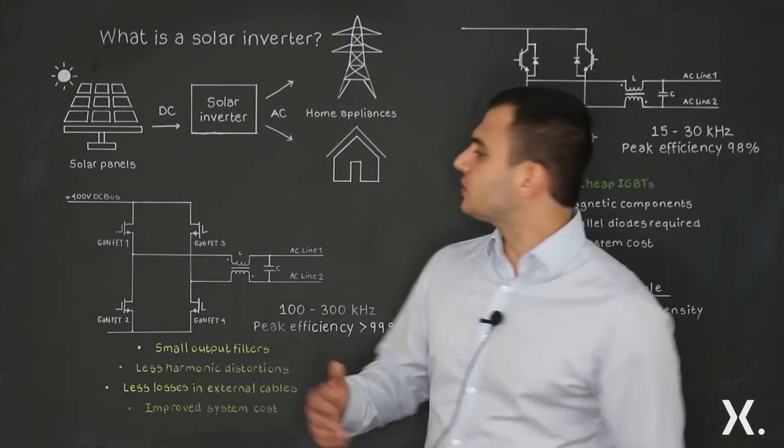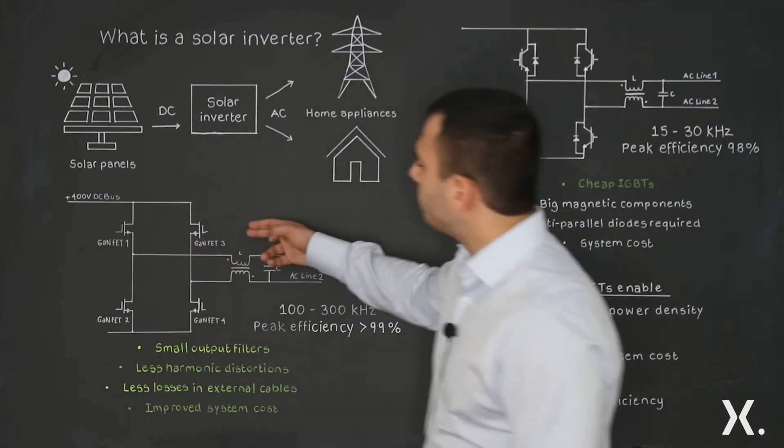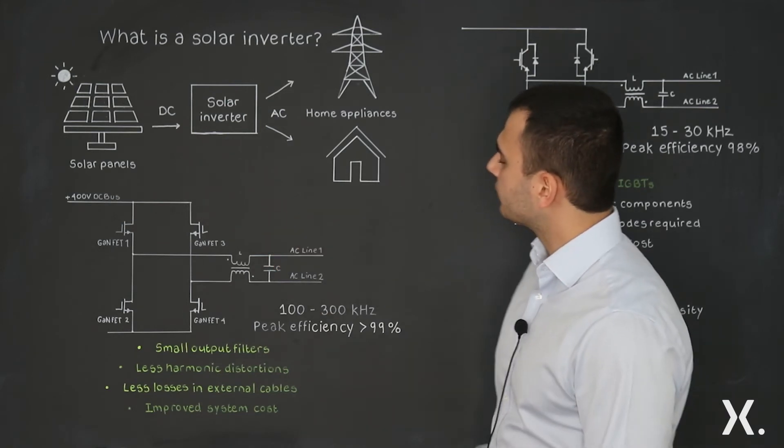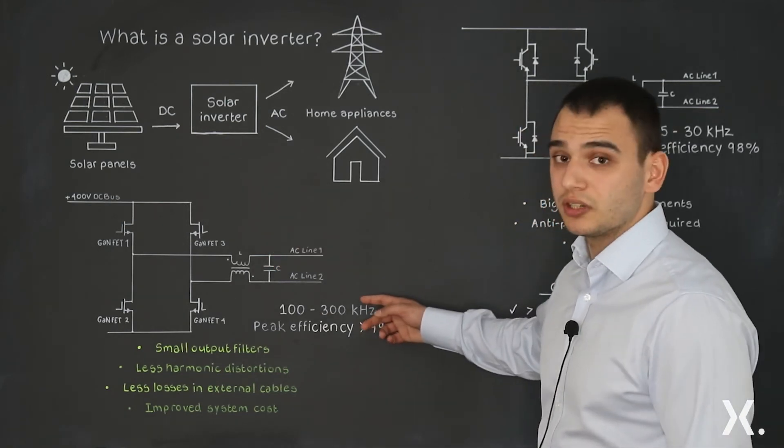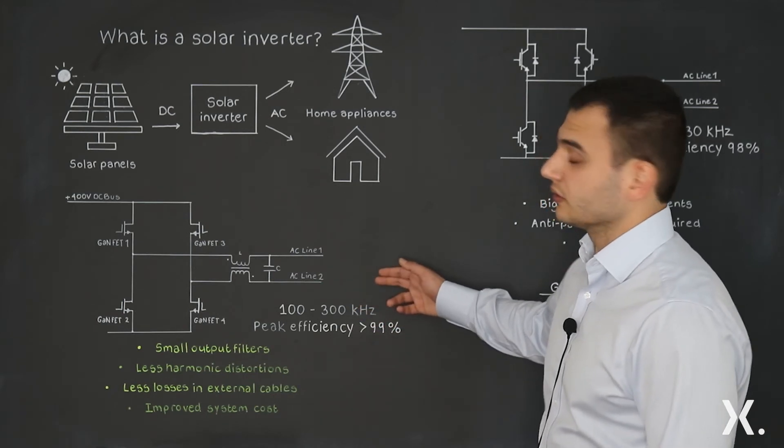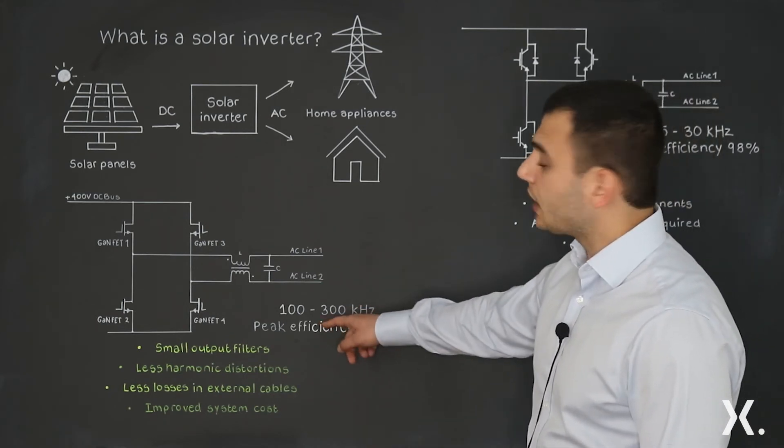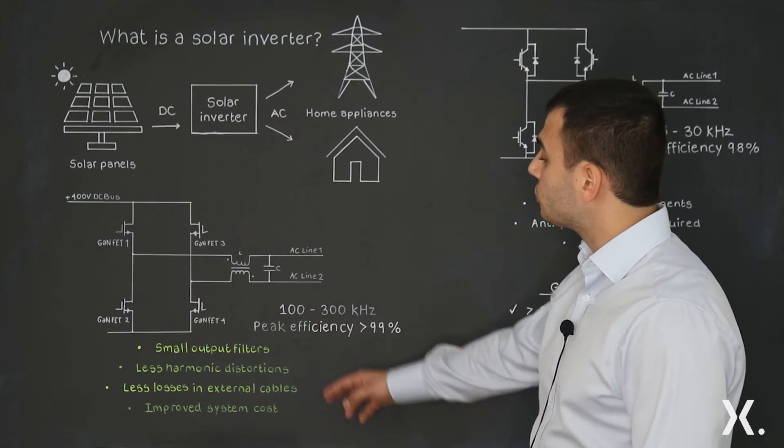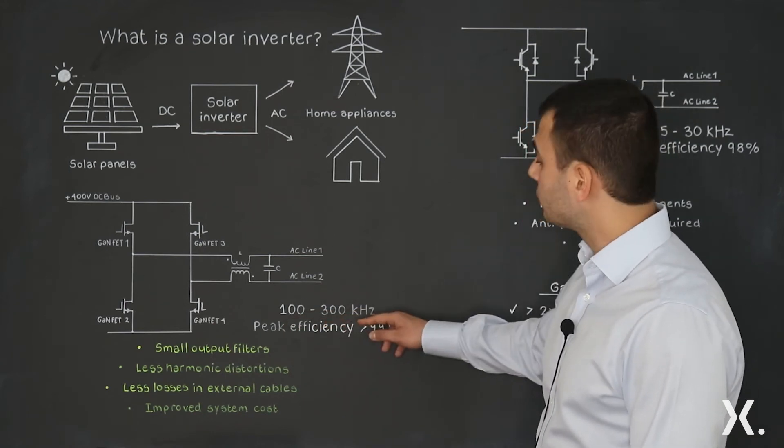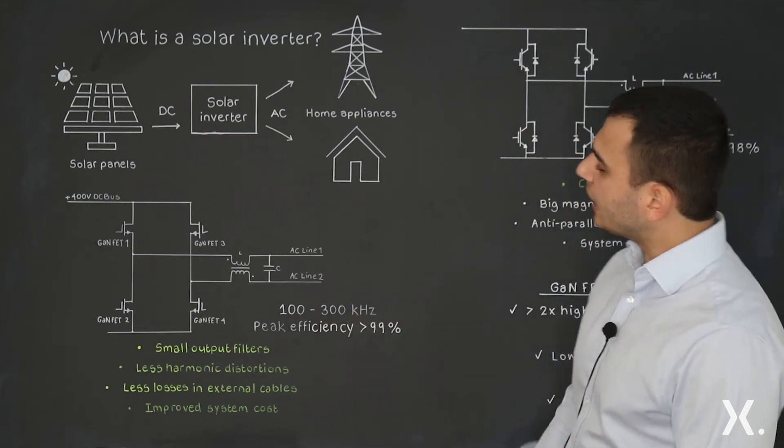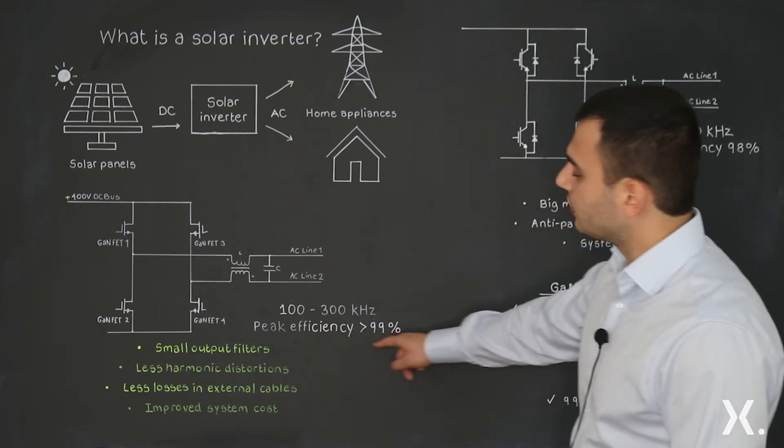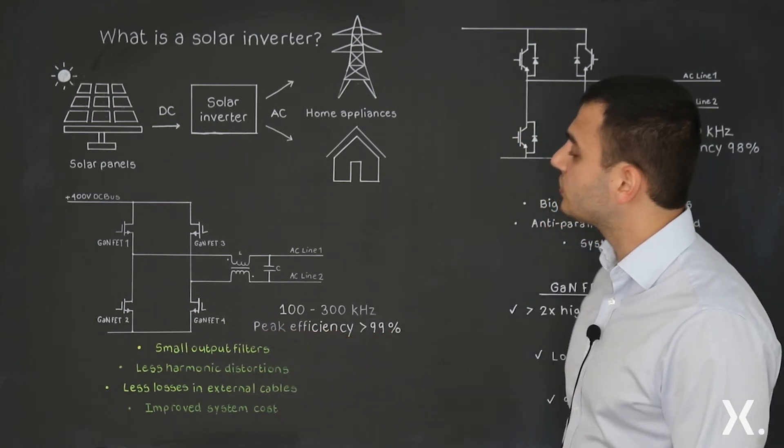Now let's consider the GANFET converter, and really you can see the difference here in switching is significant. You have almost 10 times increase in switching frequencies, so you can switch from 100 to 300 kHz, and you're not compromising the efficiency - you can achieve more than 99% efficiency.